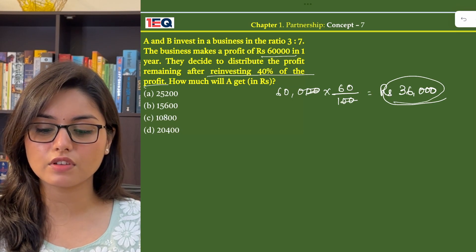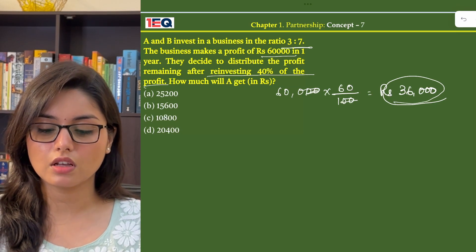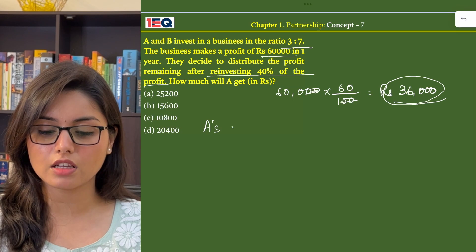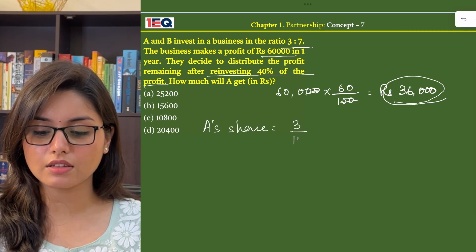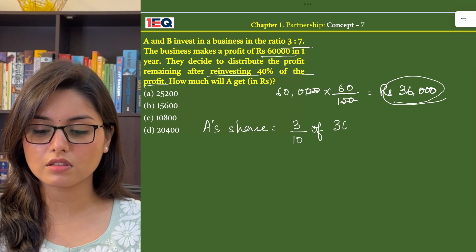Now the ratio is already given, that is 3 is to 7. So A's share in profit will be 3 by 10 of Rs. 36,000.